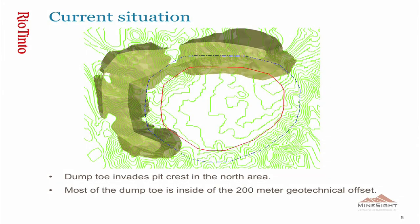You can see in this picture the current situation — the configuration of the waste dump located around the pit and the deposit. The red line shows the limit of the pit optimization unconstrained by the dump toe. The blue line shows the 200-meter offset that must be respected for the geotechnical standard. The dump is inside that offset and the north part is inside the open pit.